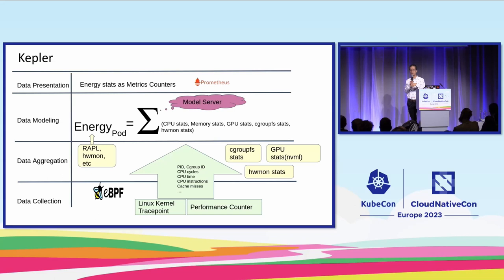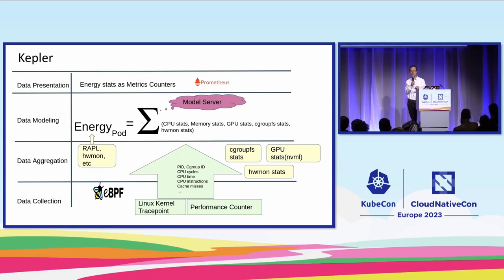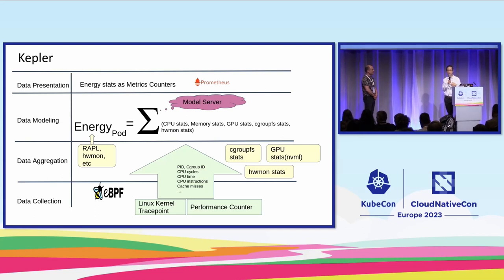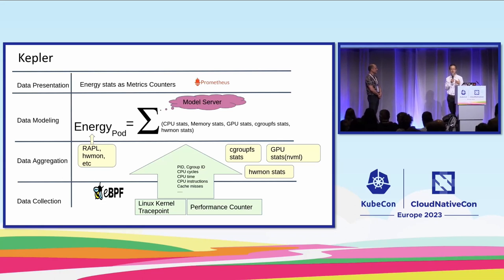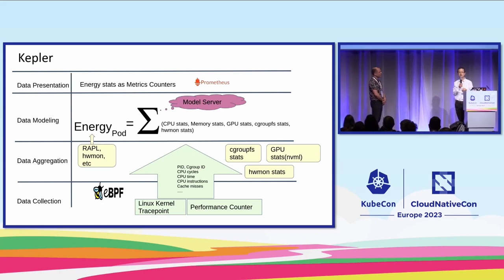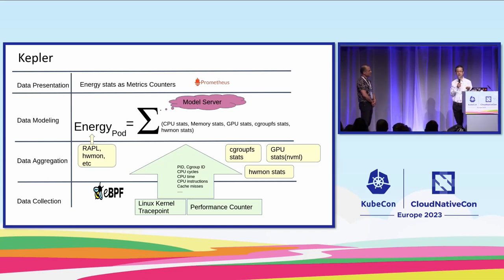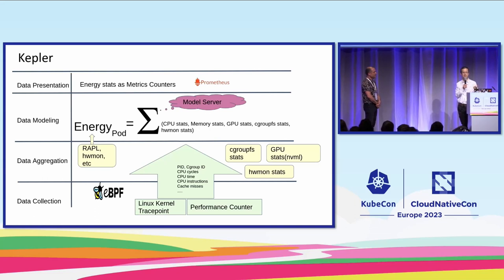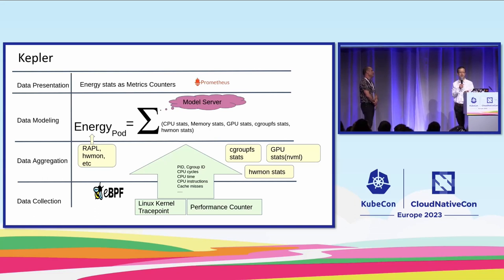When running on bare metal, we use hardware counters to tell how much energy workloads use. When running on virtual machines — as in most public or private clouds — you don't have access to hardware counters, so we use software counters with different models. Regardless of where your workload runs, there's always a model to match that identifies energy consumption without changing configurations or settings.